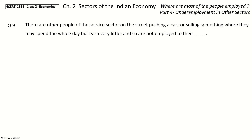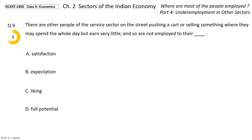Question 9: These street sellers are not employed to their what? The options are: satisfaction; expectation; liking; full potential. The answer is full potential. Please note: all other options are also applicable, but in economics we look at the potential of people and their employment. They are underemployed economically because they are not employed to their full potential.